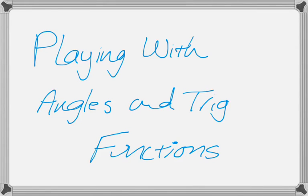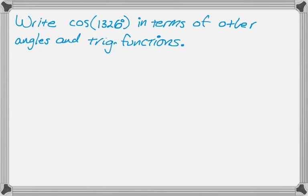This video gives an example of what I call playing around with angles and trig functions. I'm fond of these sorts of problems because they make you think about co-functions, where the different functions are positive, reference angles, and coterminal angles. What I want to do is write the cosine of 1,326 degrees in terms of other angles and other trig functions.